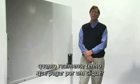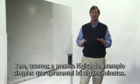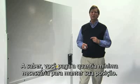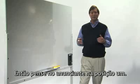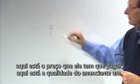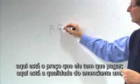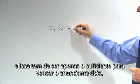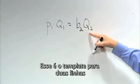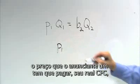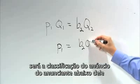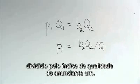Now we know how the ads are ranked — but how much do you actually pay for a click? We use the same logic as in the simple example: you pay the minimum amount necessary to retain your position. So think of the advertiser in position 1 competing with the advertiser in position 2. The price advertiser 1 has to pay, divided by his quality Q1, must just be enough to beat advertiser 2, who bids B2 with quality Q2. Solving that equation, the actual CPC is the ad rank of the advertiser below divided by the quality score of advertiser 1.